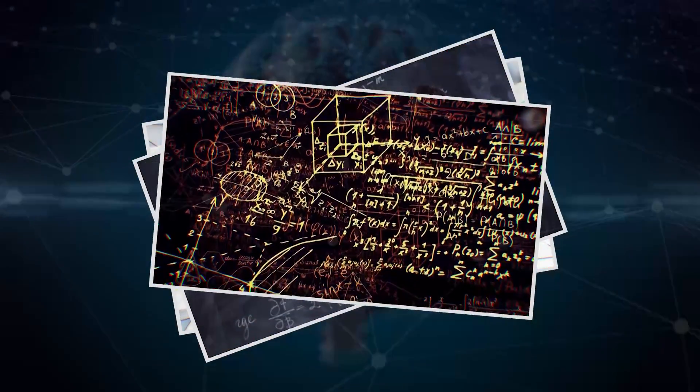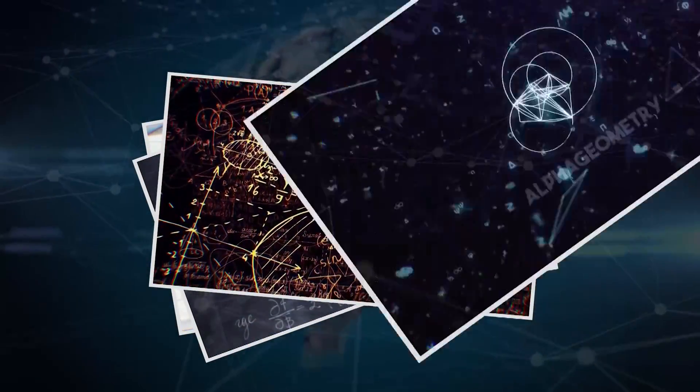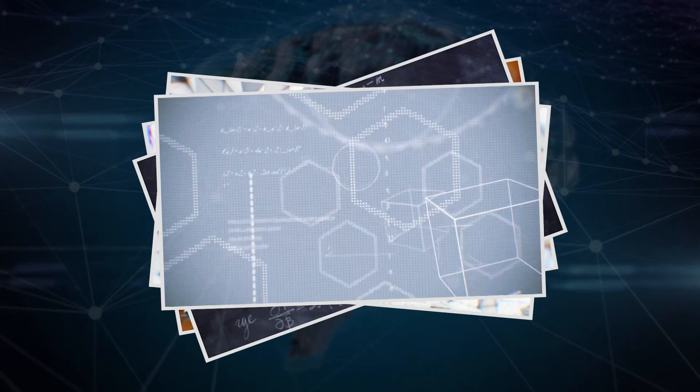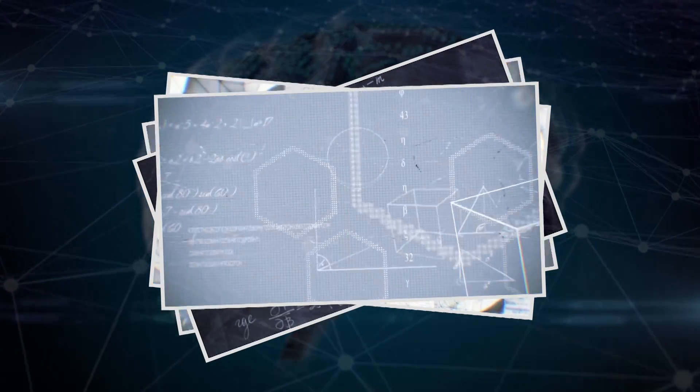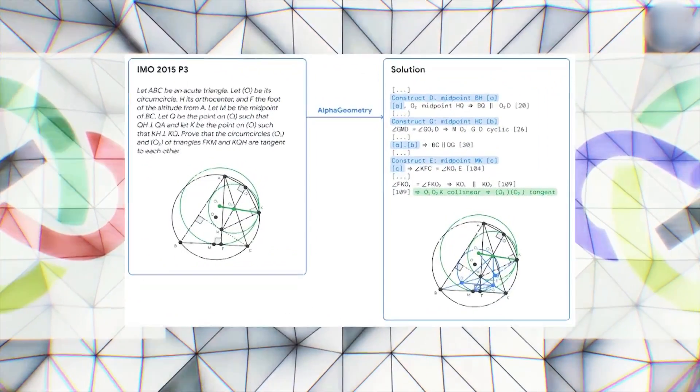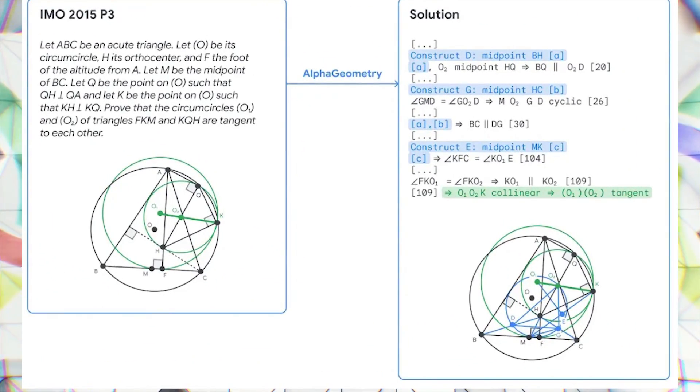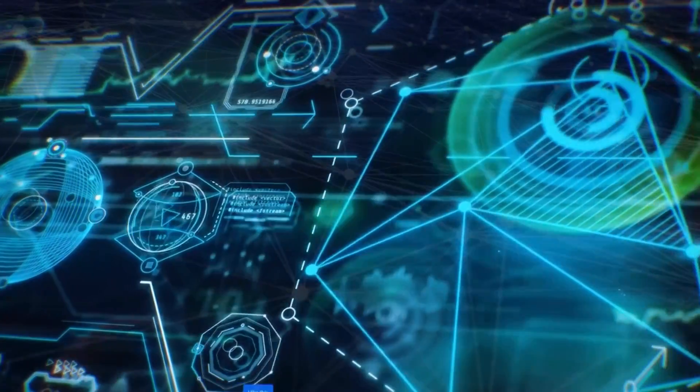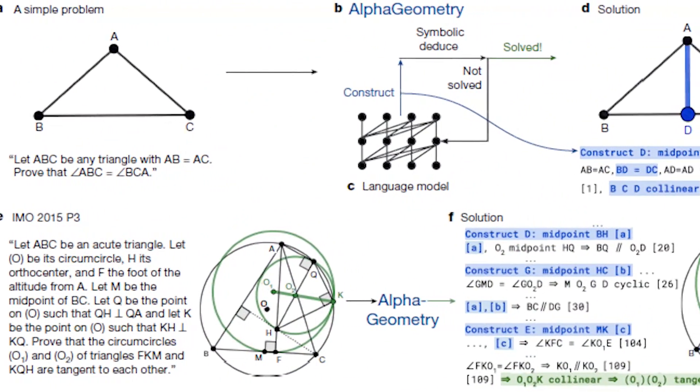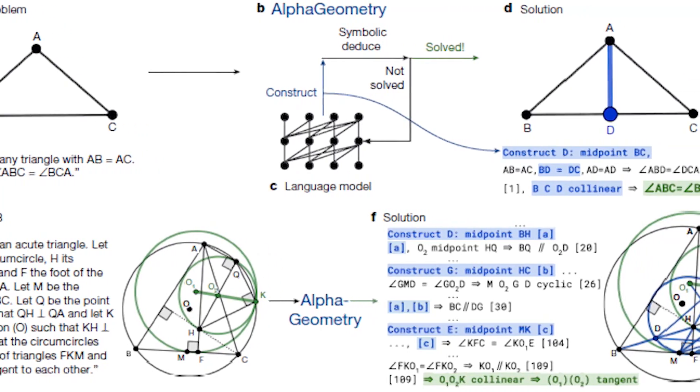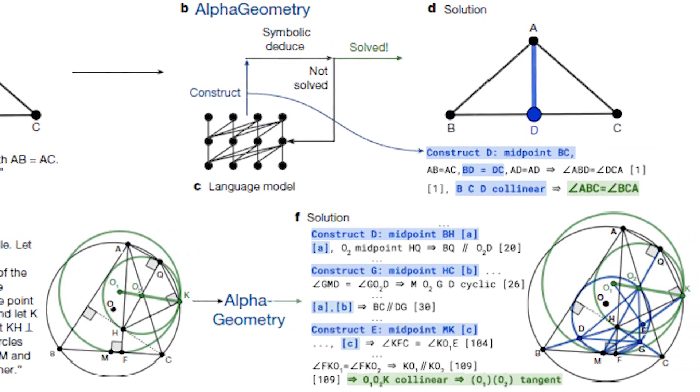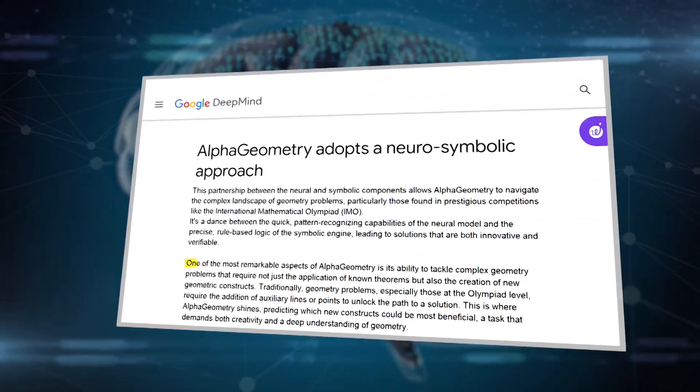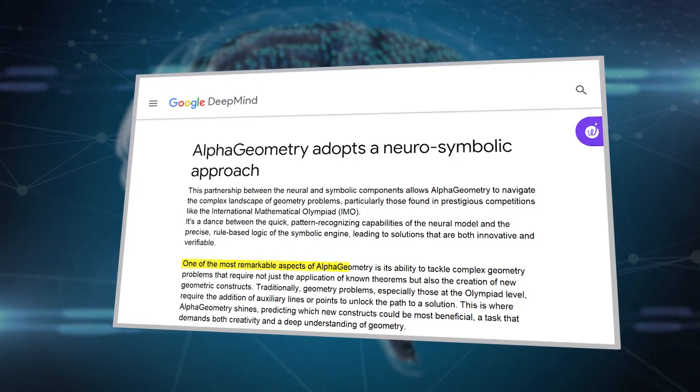This partnership between the neural and symbolic components allows Alpha Geometry to navigate the complex landscape of geometry problems, particularly those found in prestigious competitions like the International Mathematical Olympiad, or IMO. It's a dance between the quick, pattern-recognizing capabilities of the neural model and the precise, rule-based logic of the symbolic engine, leading to solutions that are both innovative and verifiable.